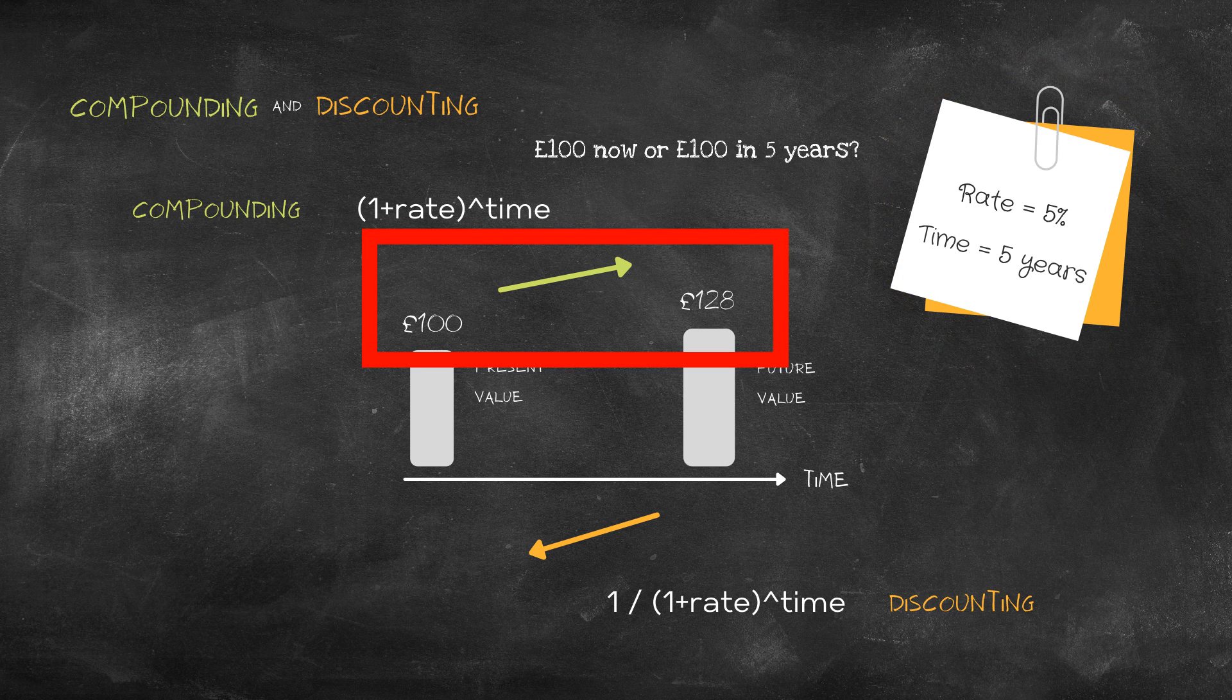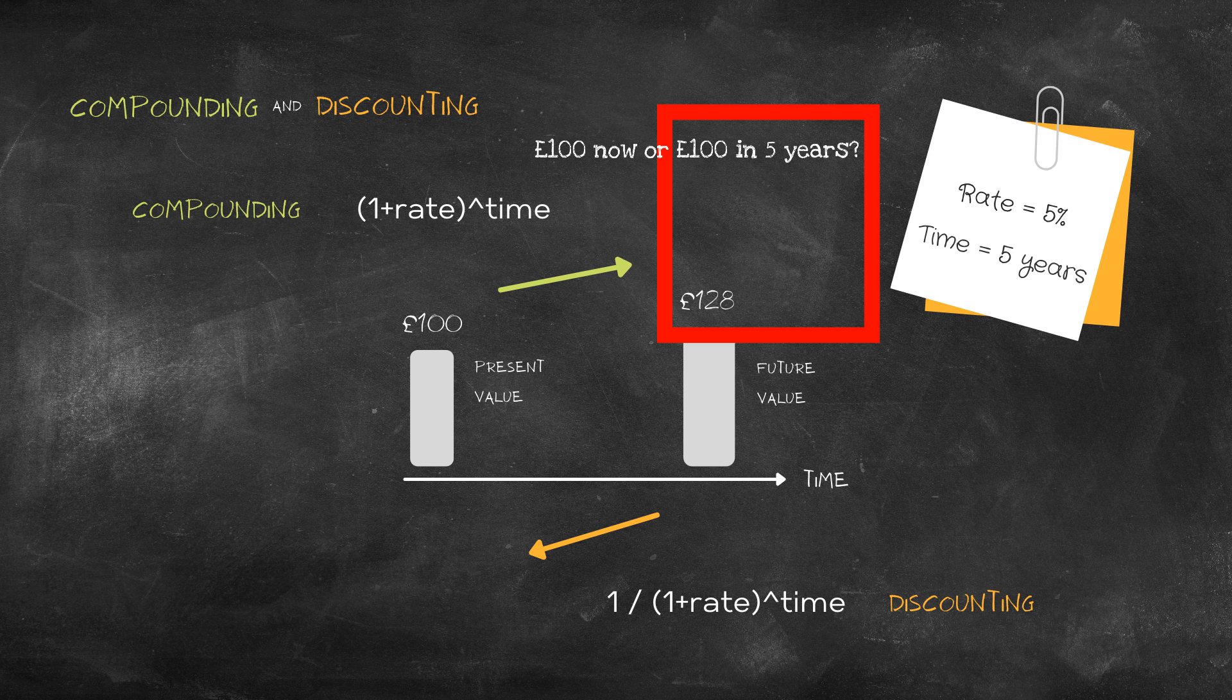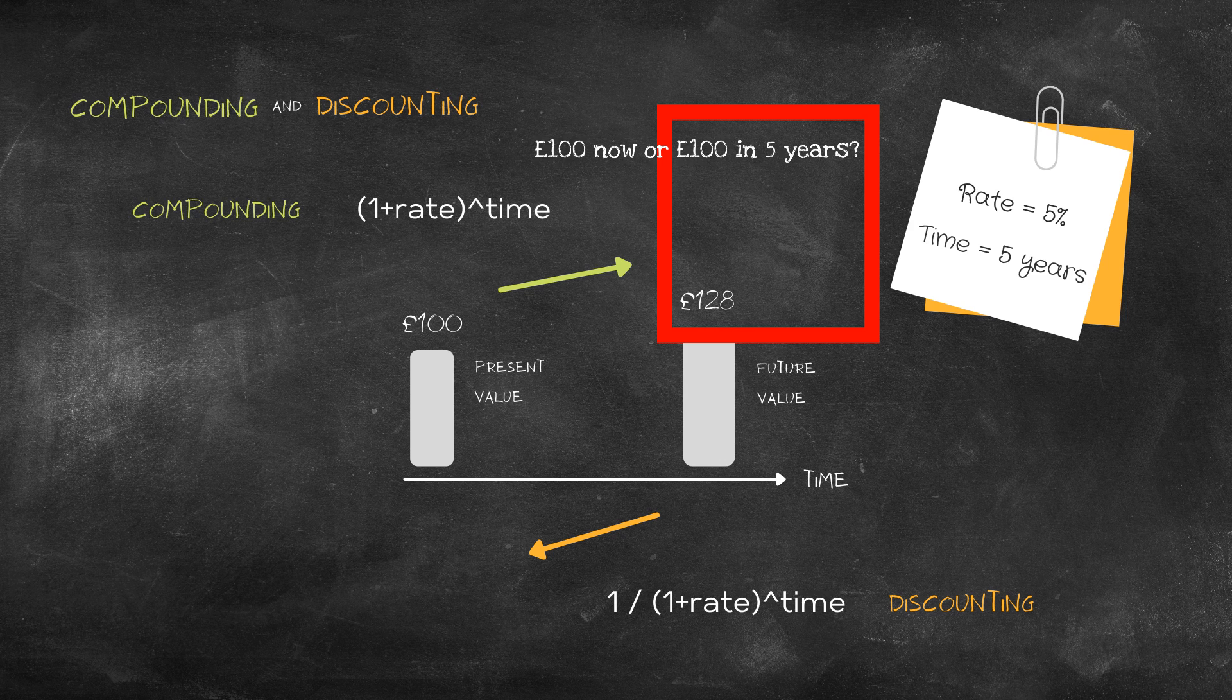In five years time you would have 128 pounds or you would have a hundred pounds depending on which offer you had taken. Now I know which one I'd rather have - the hundred pounds now. The concept is naturally called the time value of money.